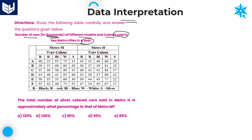All the values — at the end of each and every value, you need to keep three zeros. Because if it is indicating 25, that is indicating 25,000. So 25,000 of red color, Model A, from Metro M.